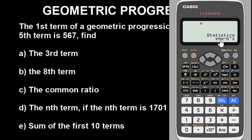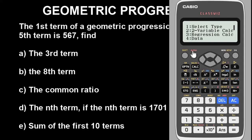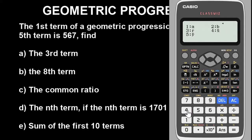Now to find a specific term — for example the third term — press the number 3, then press the Option button. When you press Option it brings up a menu; use the downward key to go down and press 4 for Regression. In the regression menu, the option to find a term value is option 5. Press 5.